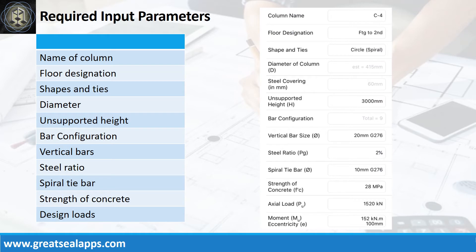Enumerate the input parameters required: column name C4, floor designation footing to second, shape and ties — circle, spiral, and steel covering 60 mm.